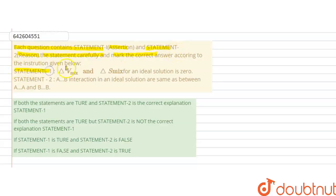Statement 1 is: delta V mixing and delta S mixing for an ideal solution is 0. And statement 2 is: AB interaction in an ideal solution are same as between AA and BB.